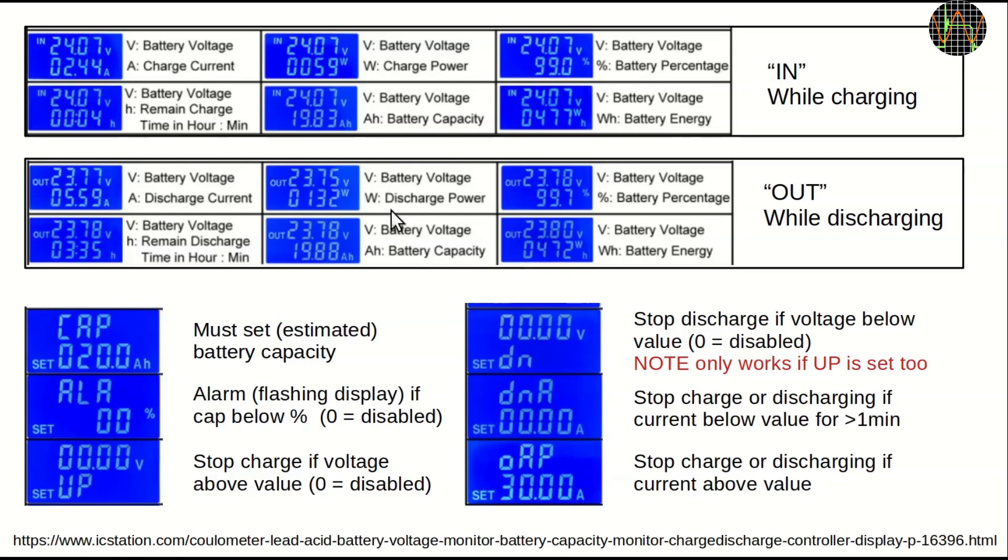The display for discharging provides the same options. Finally, the six parameters that can, or in case of the first one, must be set. CAP, standing for battery capacity, is something you have to set or pretty much none of the readouts except voltage and current work properly.